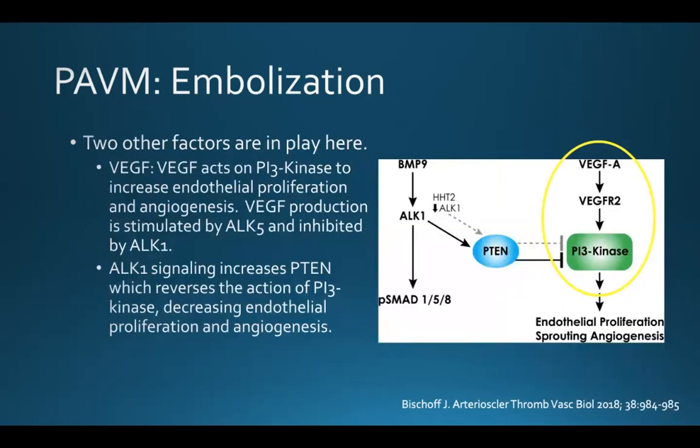There are two other intracellular processes at play here. The first involves VEGF. VEGF acts on PI3 kinase to increase endothelial proliferation and angiogenesis. VEGF production is stimulated by ALK5 and inhibited by ALK1. In addition, ALK1 signaling increases PTEN, which reverses the action of PI3 kinase, thereby decreasing endothelial proliferation and angiogenesis.